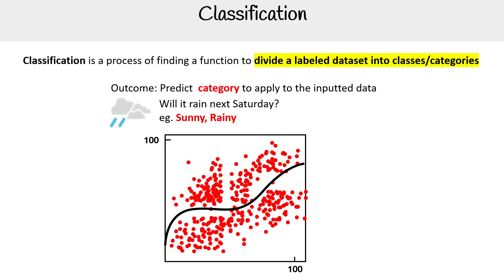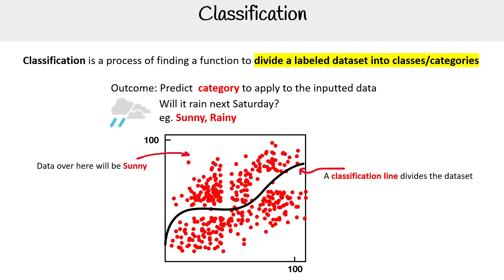We have our data and we're plotting it on a graph, but we're drawing a classification line that divides the data set. If a data point falls on one side, then it's sunny, and if it falls on the other side, then it's rainy.